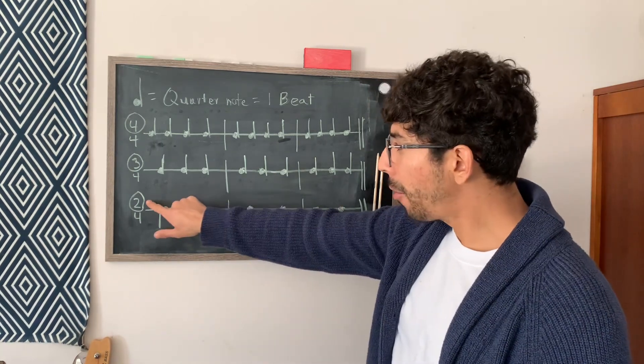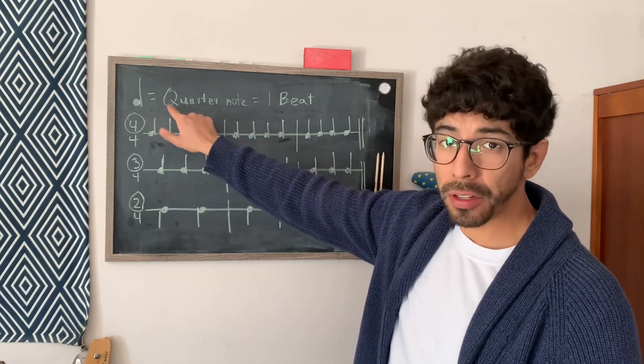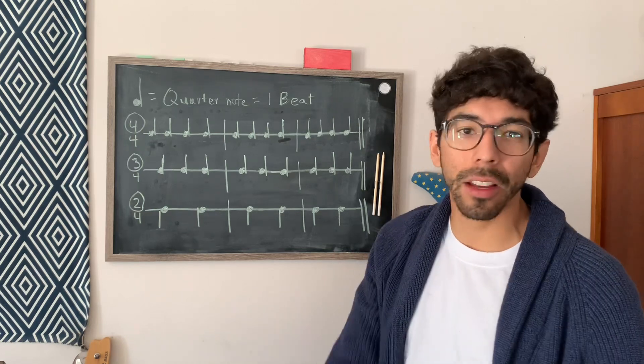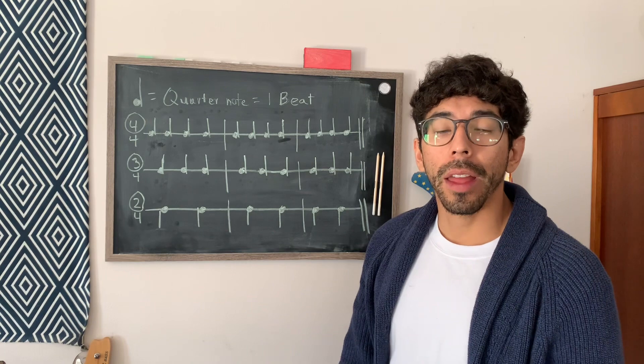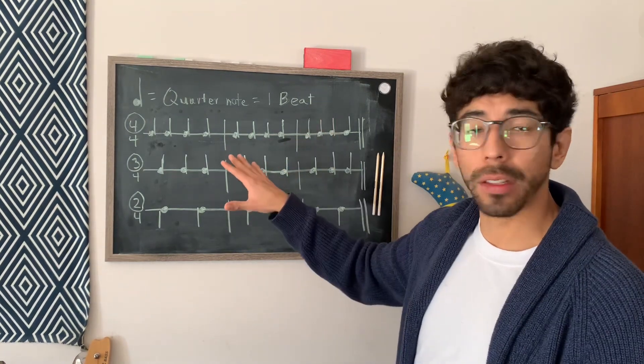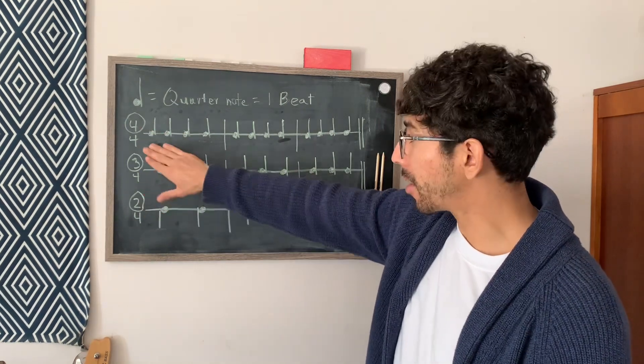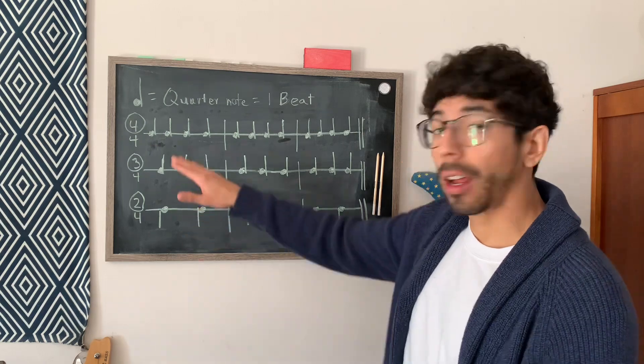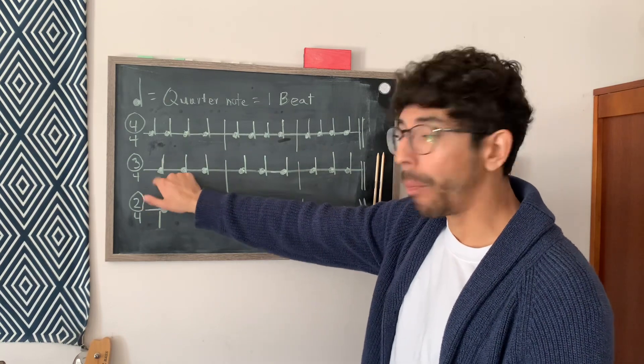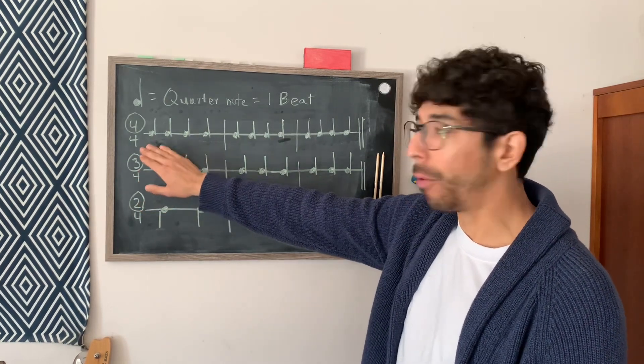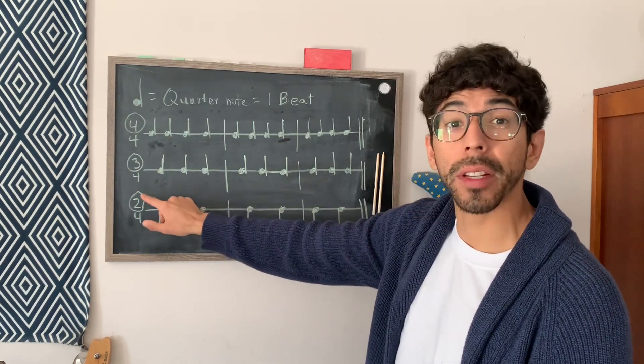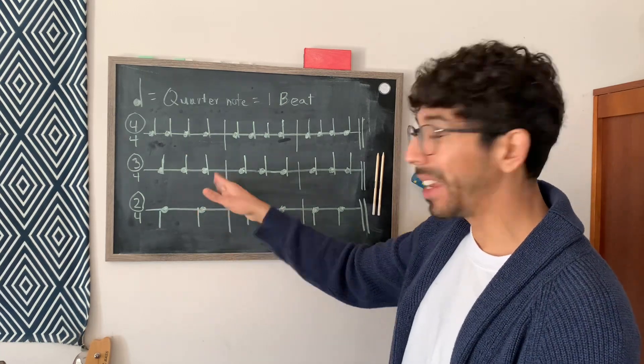So that's what the top number represents. There are other types of notes. There's half notes, whole notes, dotted half notes, eighth notes, 16th notes, 32nd notes. Eventually, I'll explain that in a future lesson. I just wanted to keep it super basic just to explain the top number on the time signatures. And like I said, in a future episode, I'll explain the other note values and also what the bottom number represents. But for now, we'll just keep it at four for the bottom number.